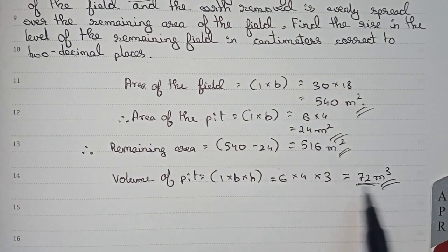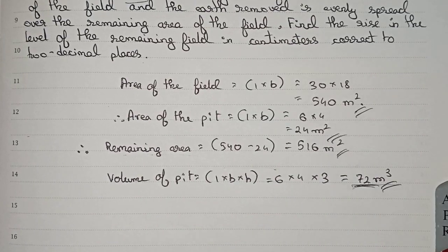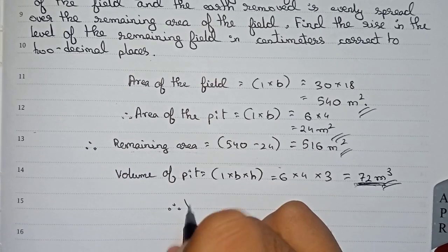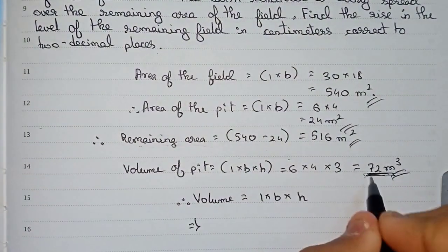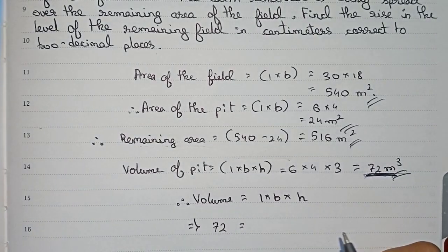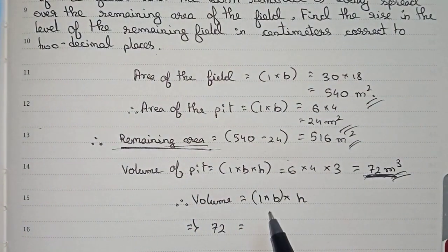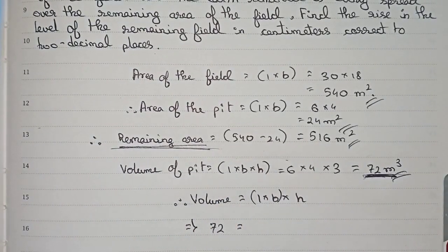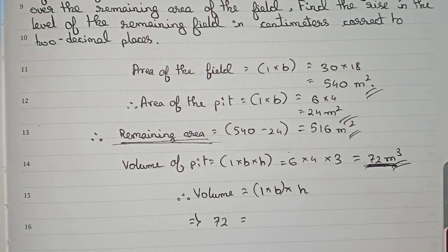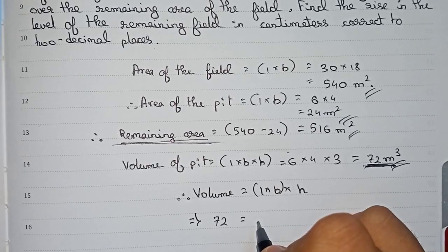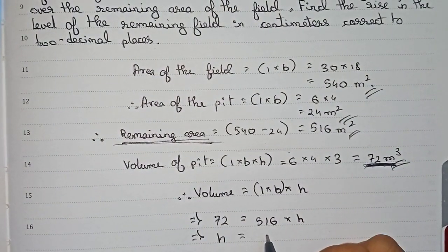This much earth is removed from the center of the field and it is evenly distributed over the remaining area. So we use: volume is equal to length into breadth into height. The volume is 72, and length into breadth here means the remaining area — 516 — since the entire volume has been deposited over the remaining area. So we need to find the height: height is equal to 72 divided by 516.